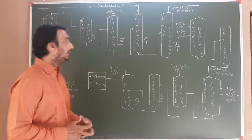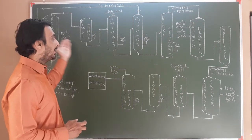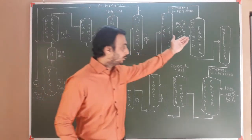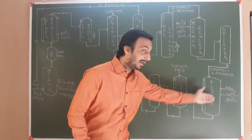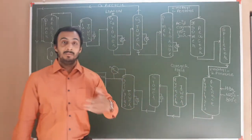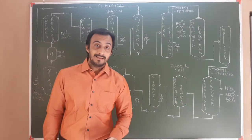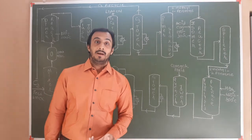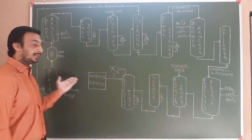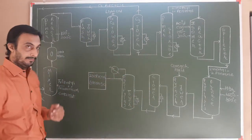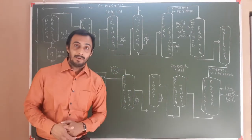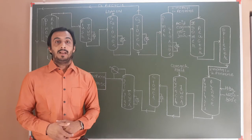To summarize, we can understand the working of dimerization, isomerization, and pyrolysis, and other processes. Finally, we have isoprene produced from C3 feedstock.